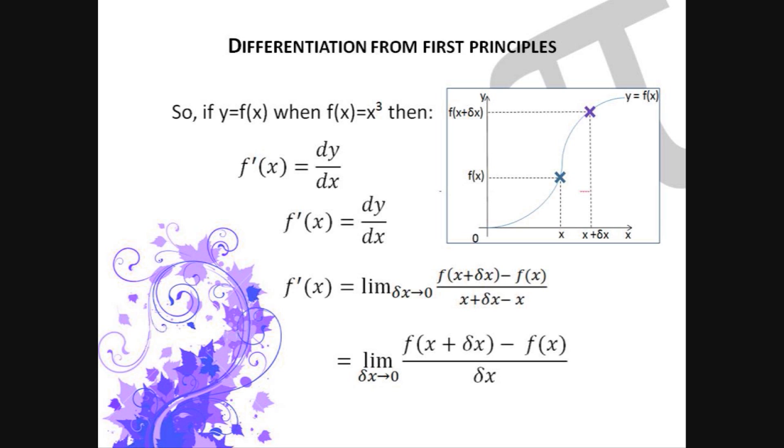So, if f dashed x equals dy by dx, f dashed x equals the limit as delta x tends to zero. So, we've got the limit as delta x tends to zero, f of x plus delta x minus f of x all over delta x.